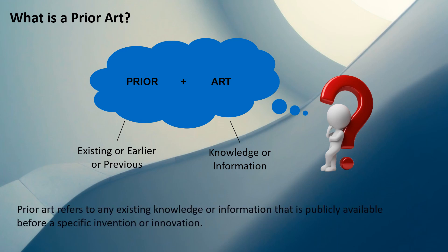Prior art refers to any existing knowledge or information that is publicly available before a specific invention or innovation. In terms of the patent field, when a patent application is being filed or planned to be filed, any information existing in the public domain before the filing of that patent application is referred to as prior art — information or knowledge which is already known.